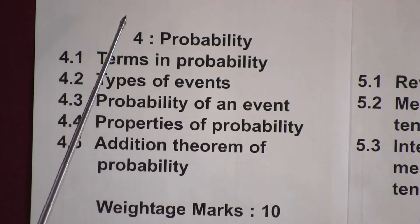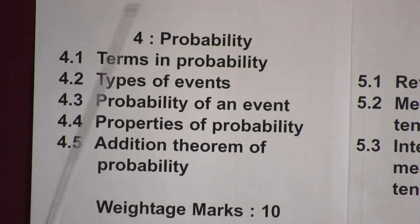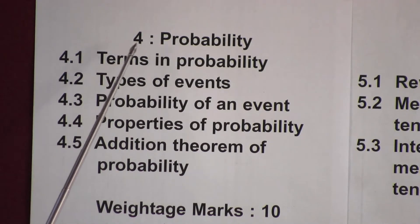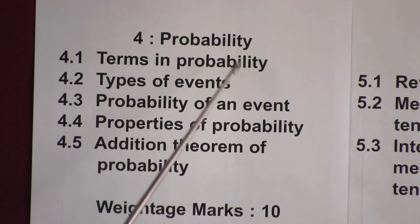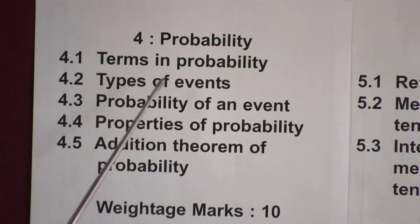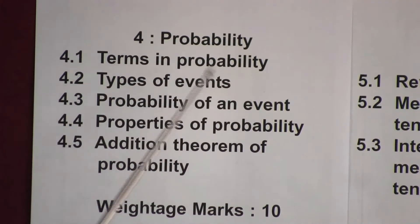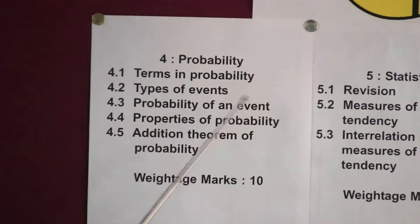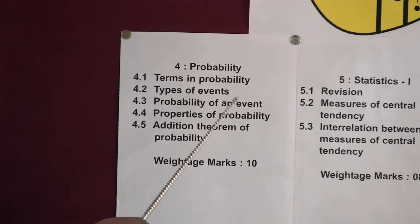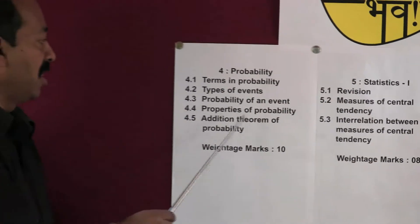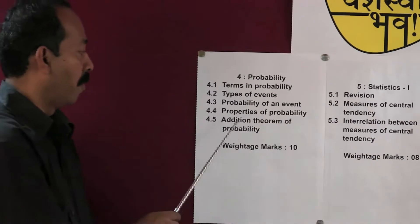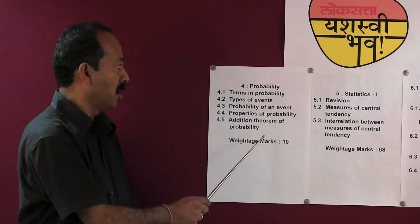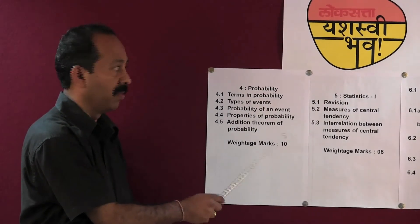Chapter 4: the name of the chapter is Probability. The important contents are: Terms in probability, Types of events, Probability of an event, Properties of probability, and Addition theorem of probability. The weightage of marks for this chapter is 10.